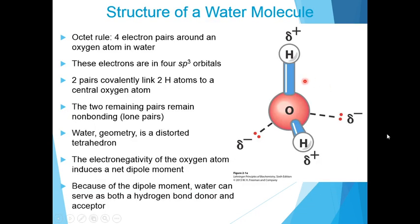Let us consider the structure of a water molecule. The structure of a water molecule consists of one oxygen atom and two hydrogen atoms attached to the oxygen atom. From the octet rule, there are four electron pairs around an oxygen atom in water molecule. These electrons are in four sp3 orbitals. Two pairs covalently link two hydrogen atoms to a central oxygen atom.